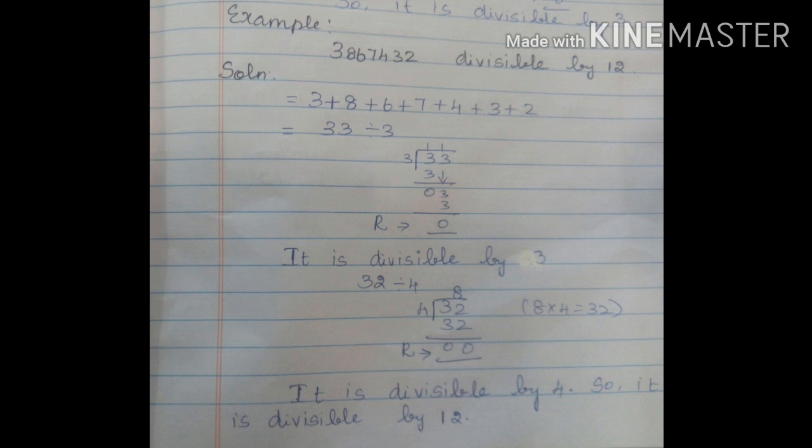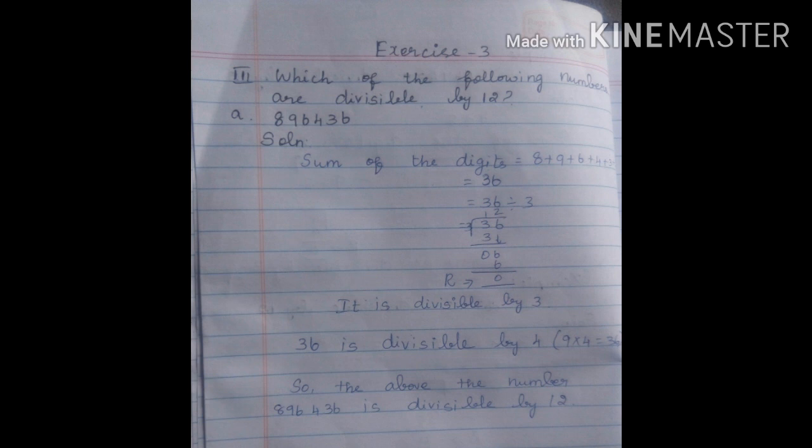So it is divisible by 4. So the above number 3, 8, 6, 7, 4, 3, 2 is divisible by 12.